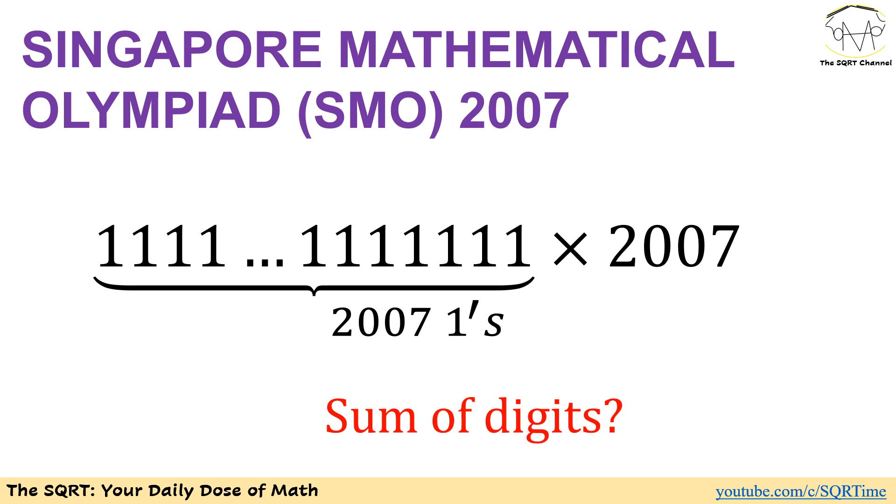This is from the junior section. In this problem, we have a big number with 2007 digits, all of them are going to be 1. This big number is multiplied by 2007, and we are looking to find the sum of the digits in the final answer.